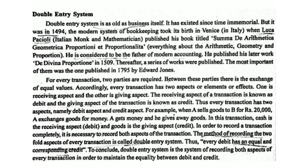If you buy a piece of gold, then you pay cash. Cash is the receiving aspect; goods is the giving aspect. Cash is debit, and the giving aspect is credit.